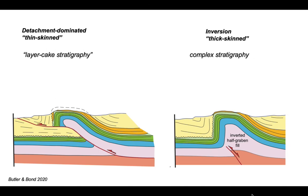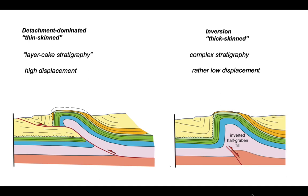These two interpretations have different implications. First, for the stratigraphy: on the left-hand thin-skinned example the stratigraphy is relatively simple, not varying significantly across the structure — a layer-cake stratigraphy. Whereas on the inversion example on the right, the half-graben fill is significantly thicker than away from the fold structure, giving a more complicated stratigraphic scenario. Additionally, the detachment-dominated system has significantly higher displacement — almost twice as much shortening is involved in creating the ramp anticline on the left than in the inversion structure to the right.